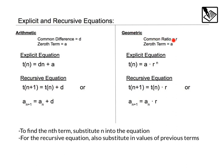For geometric equations, we have a common ratio r and the zeroth term a. For our explicit equation, we have t(n) equals a, the zero term, times the common ratio to the power of n. That would be like multiplying the common ratio over and over again, the number of times as the term number. For a recursive equation, we say the next term t(n+1) is equal to the last term t(n) times that common ratio. Finally, to find the nth term, substitute n into the equation. For recursive equations, you also need to substitute in the previous values.